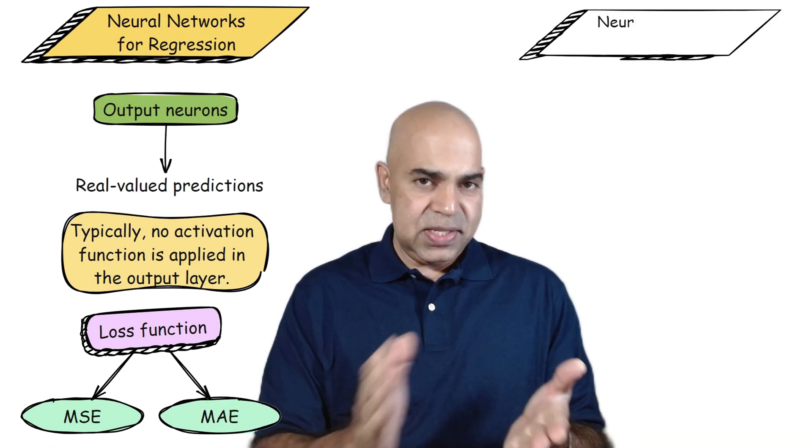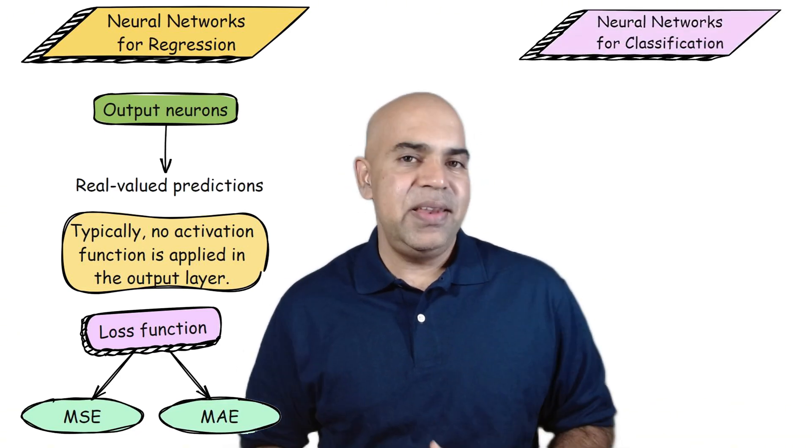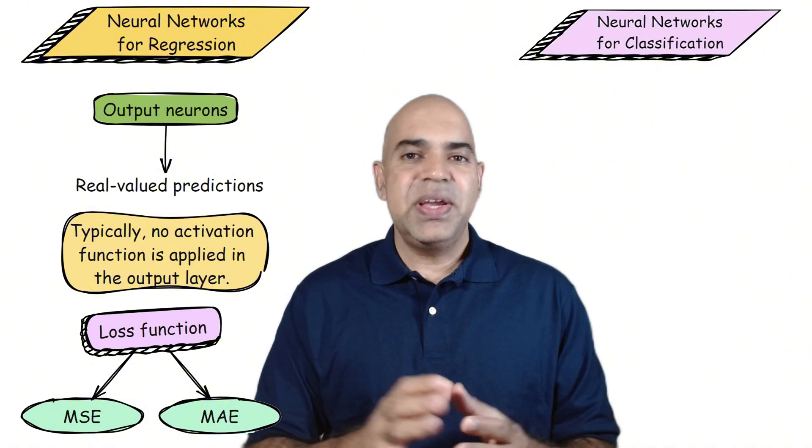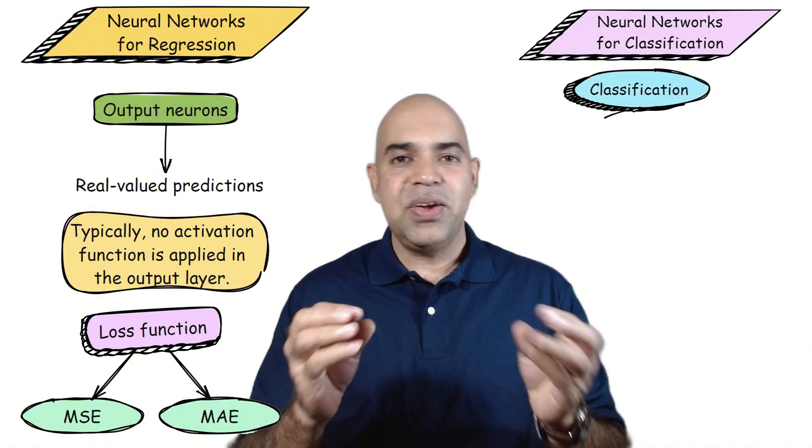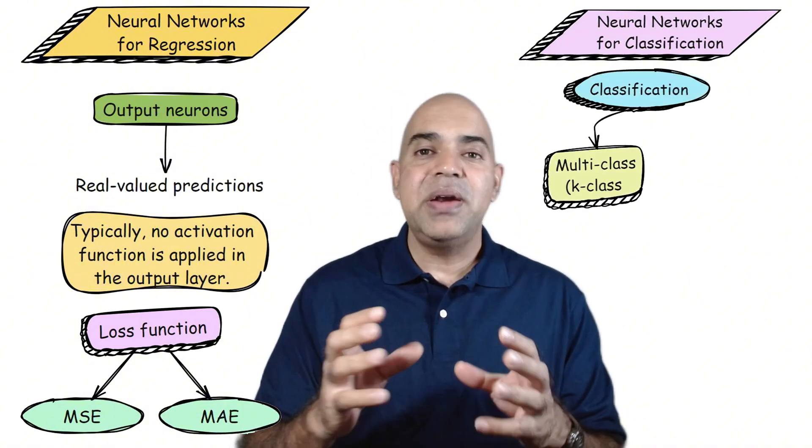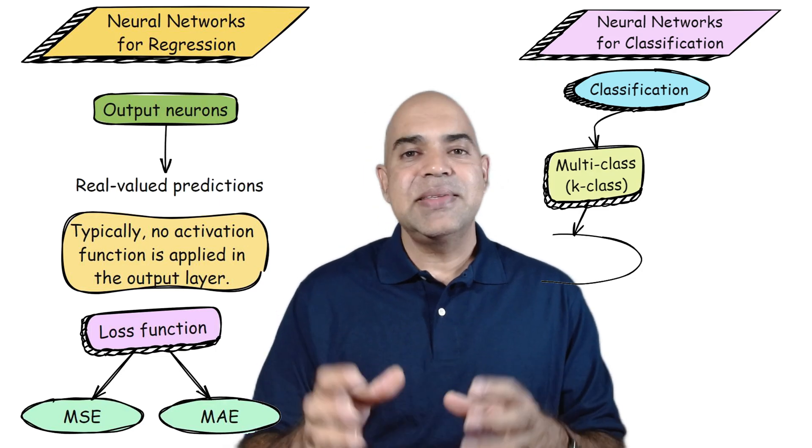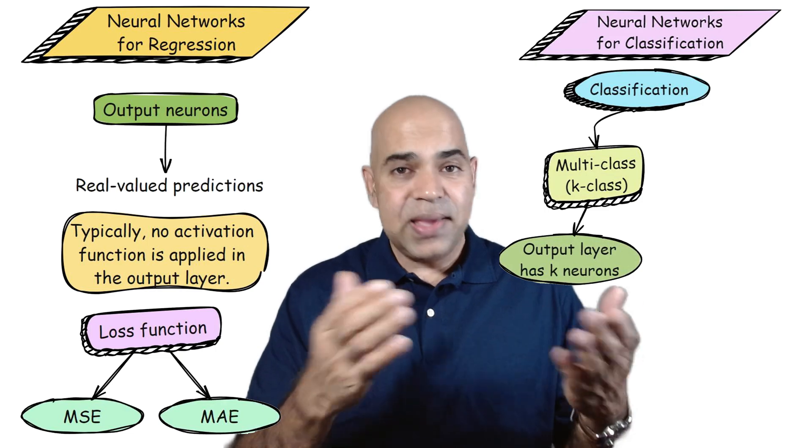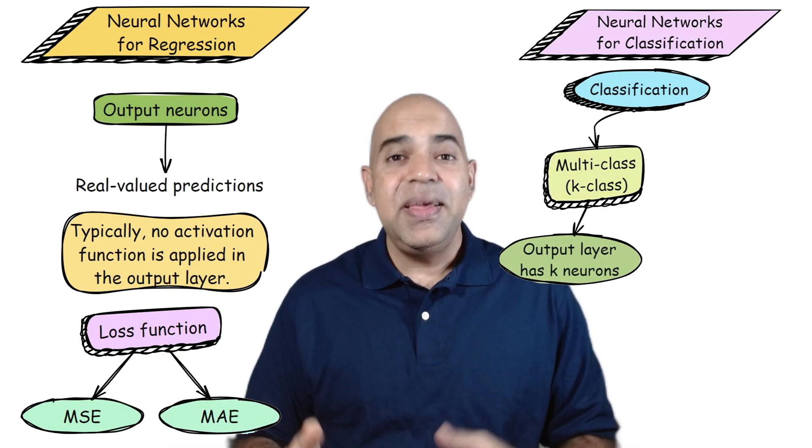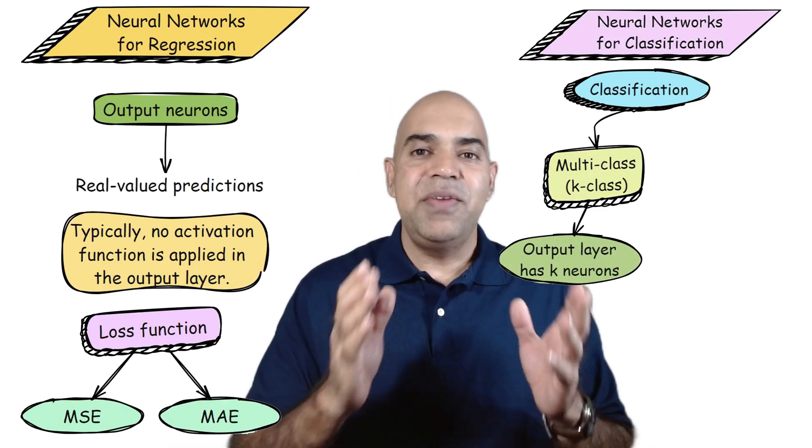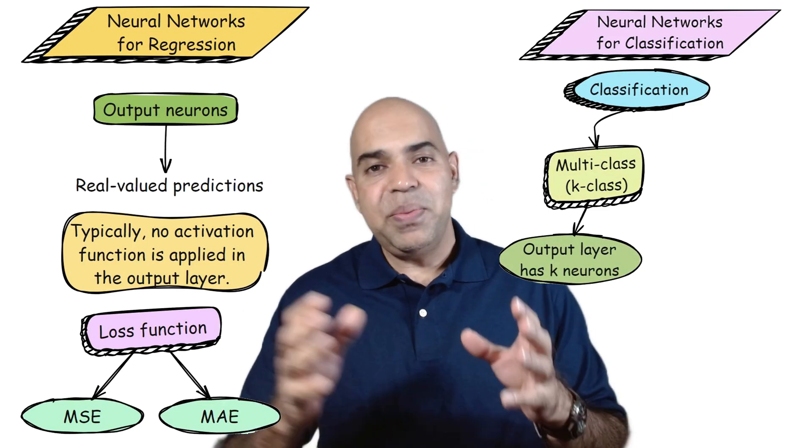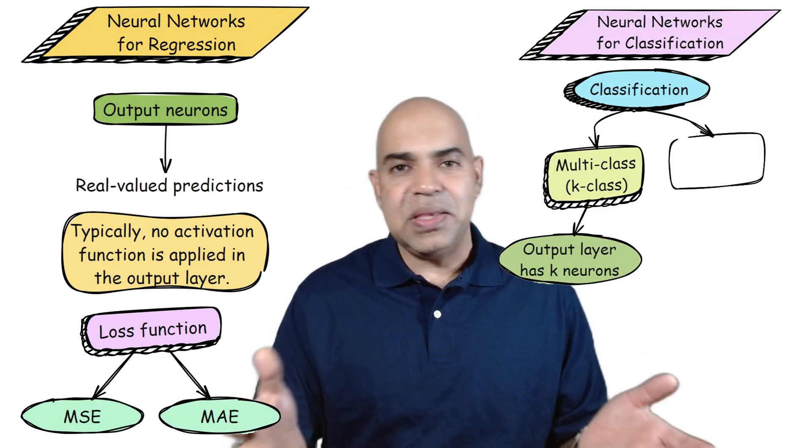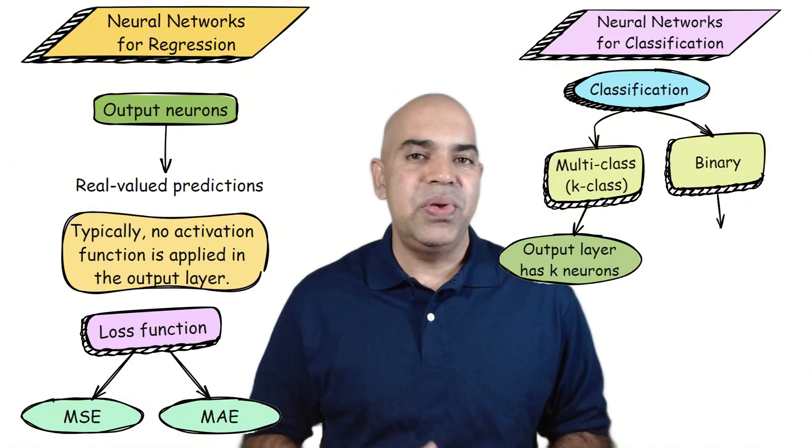The neural networks for classification problems are slightly different. In a classification task, the output layer contains one neuron per class in multi-class classification. So if you have three options like cat, dog, and bird, then the output layer will have three neurons. If you have a binary classification, you can use just one neuron in the output layer.